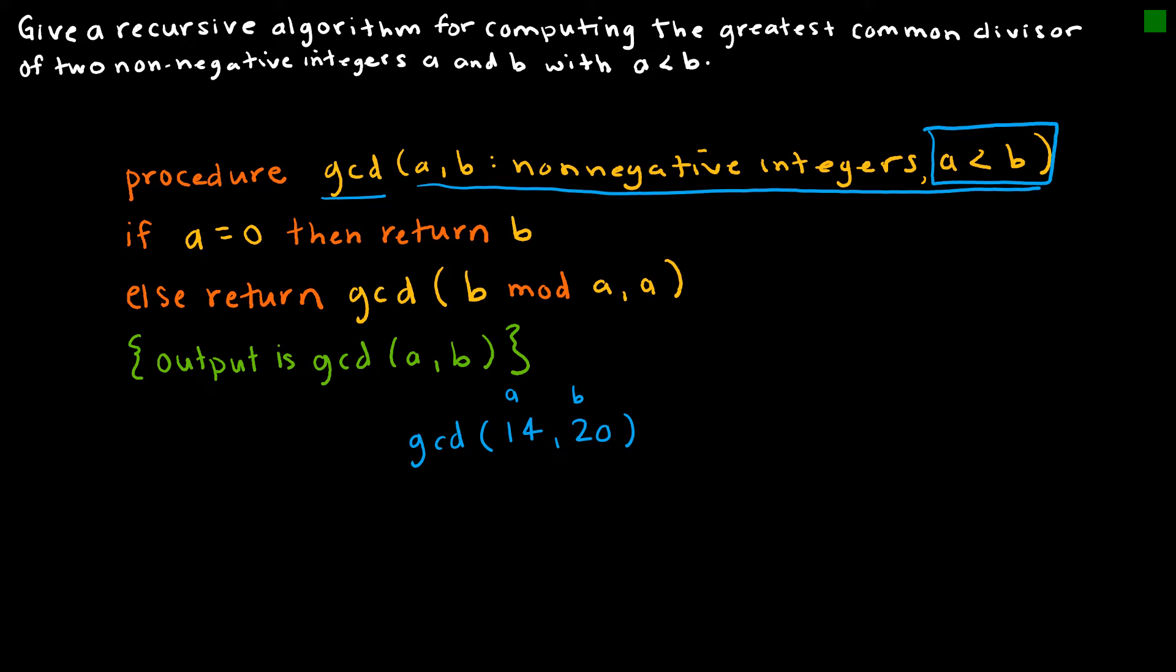The process says if A is 0, then return B. Otherwise, return the GCD of B mod A and A.